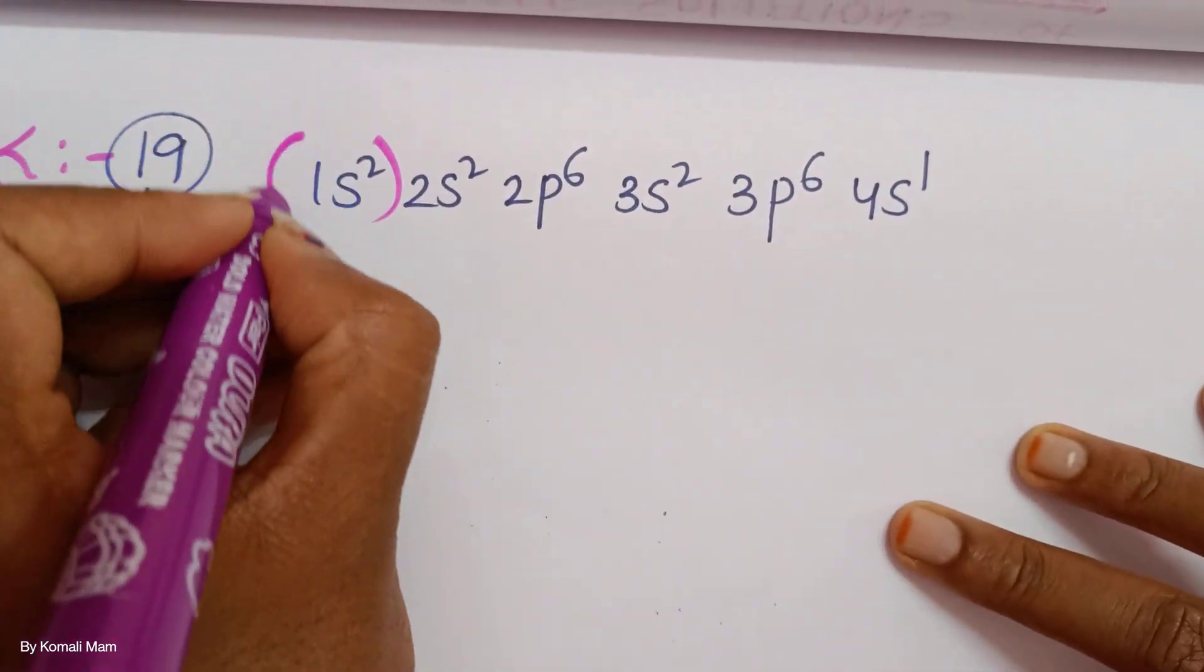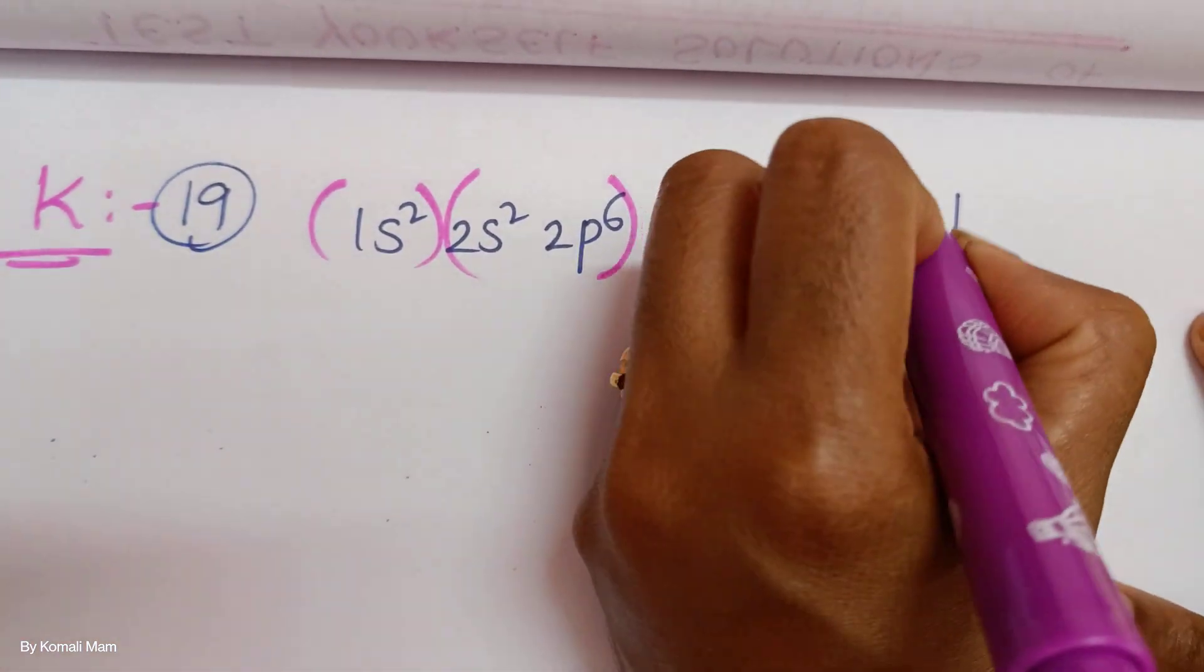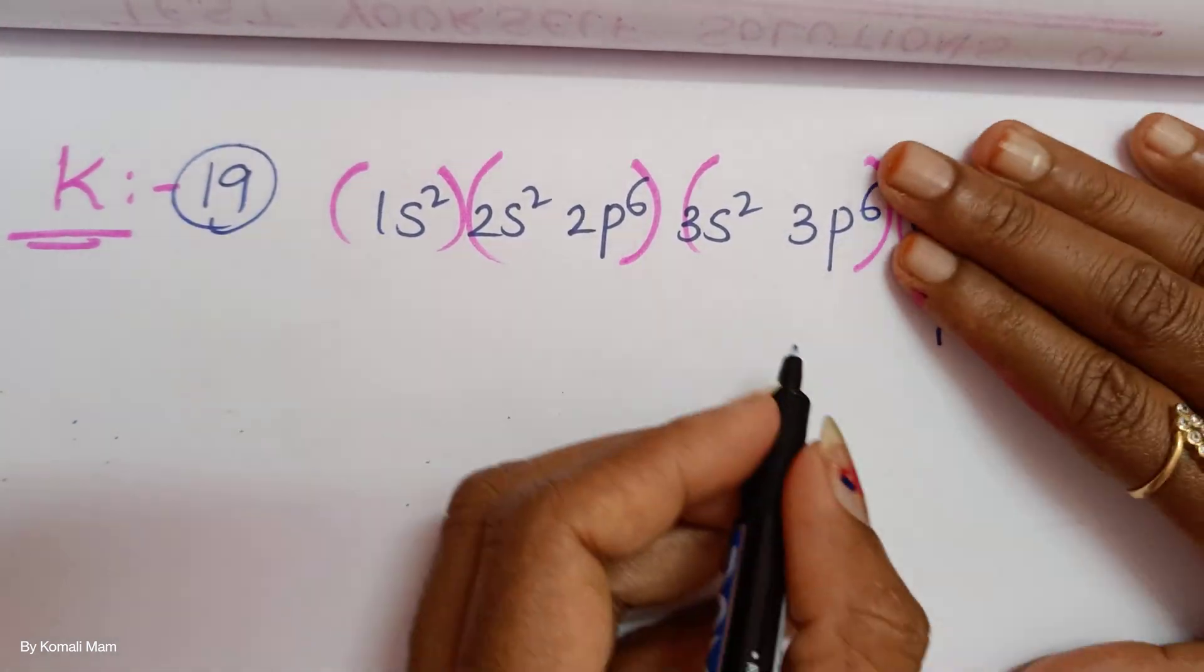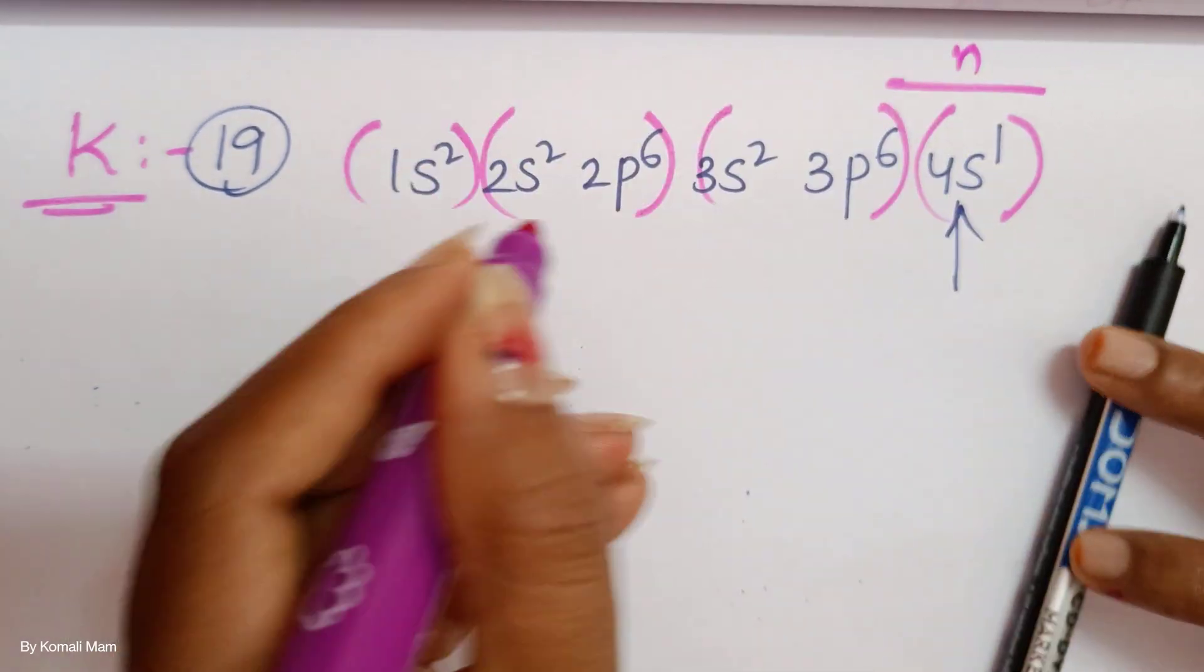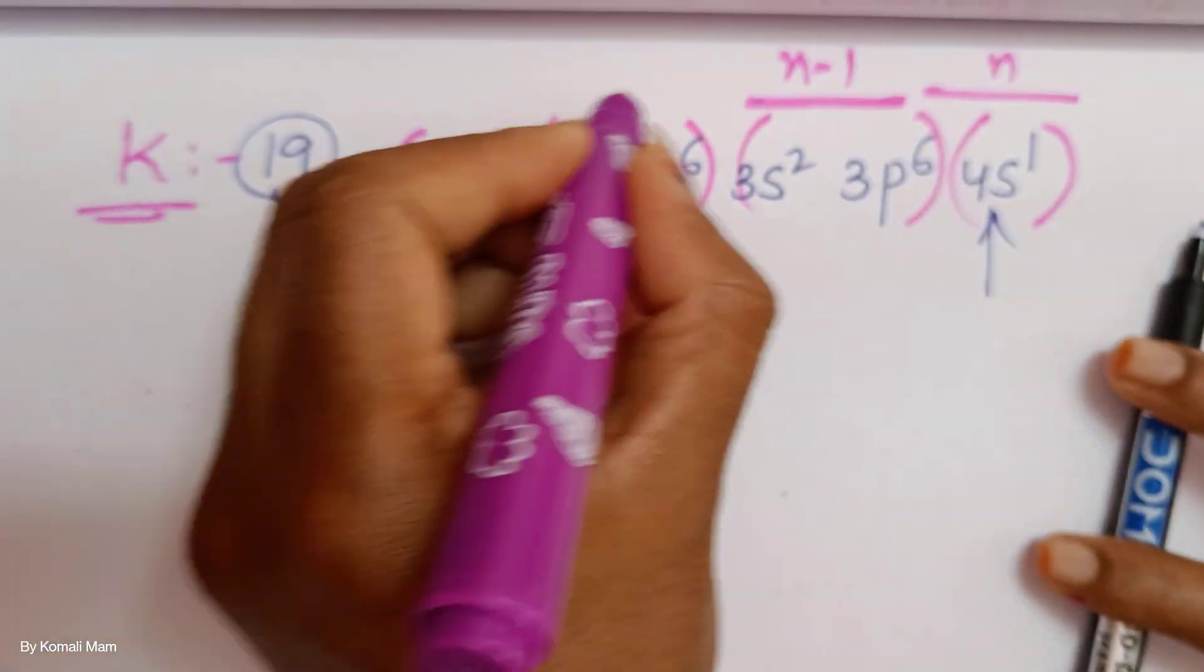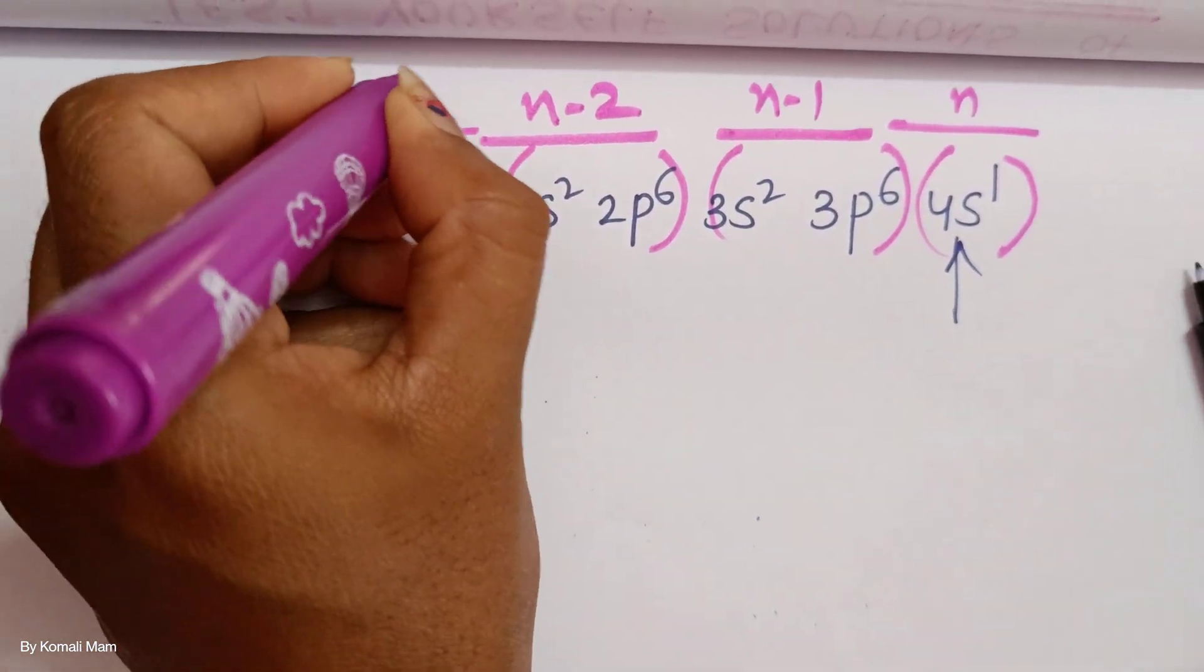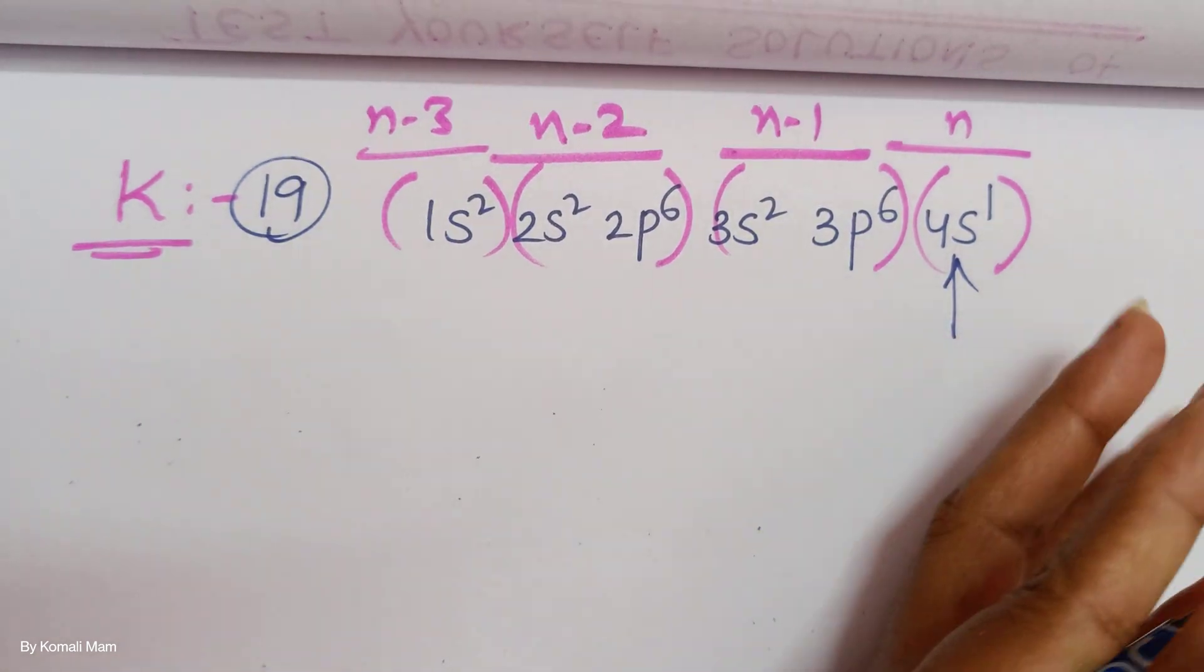Now group it. This is first shell, second shell sp together, sp together. Next, s. You are counting for this electron. Other than this, which shell? This is N, this is N minus 1, N minus 2, and this is N minus 3. That's it.